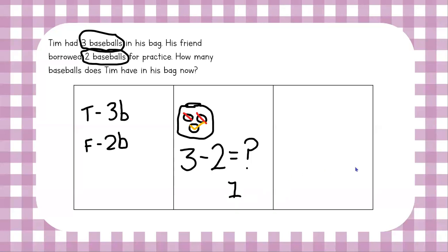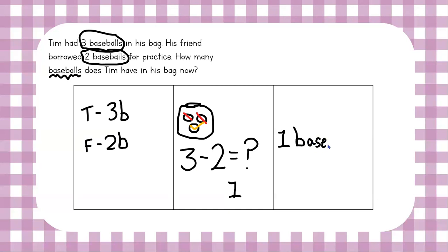But we're not done there. It is really important with word problems that we label our answer. One what? One kangaroo, one cheese stick, one party hat? No — it's one baseball. We need to label it. So we're going to label it one baseball. If you're doing a word problem and you forget how to spell, don't forget you can check right in the problem and it's spelled for you. One baseball.